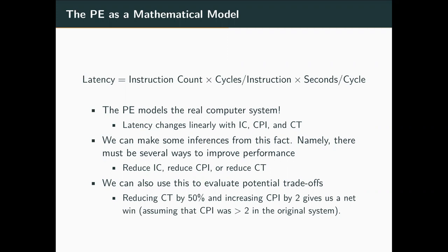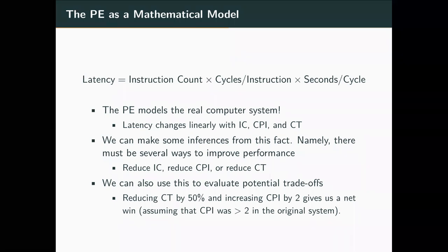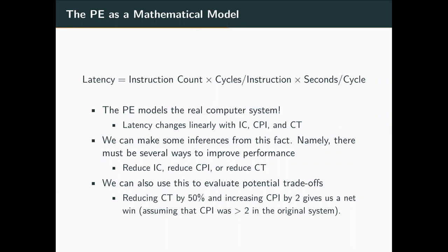Latency is linearly changing with all three of these parameters: instruction count, CPI, and clock time. It should be fairly clear — if we increase any of these, it's going to increase latency; if we decrease any of those, it's going to decrease latency. For example, if we're able to reduce clock time by 50% but increase the CPI by 2, it's probably going to give us a net win if the CPI was originally greater than 2 in the original system.